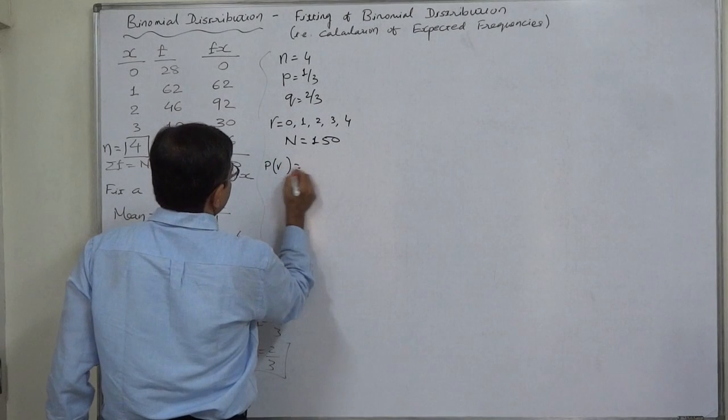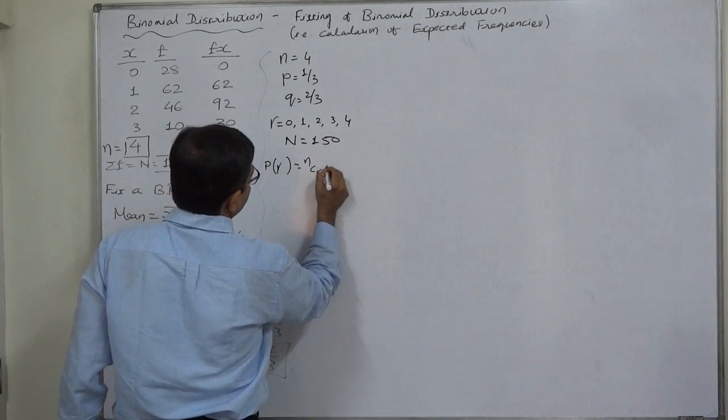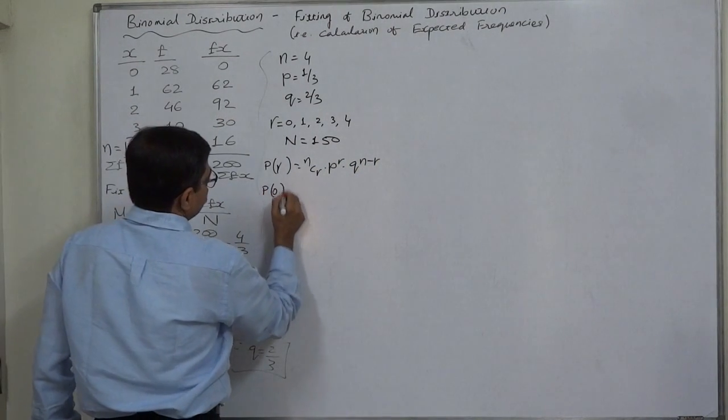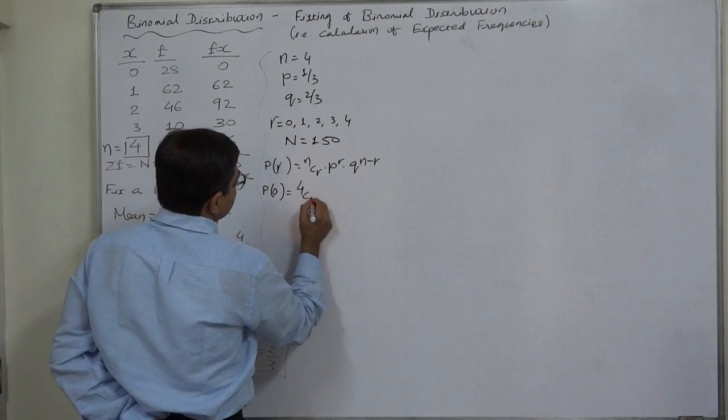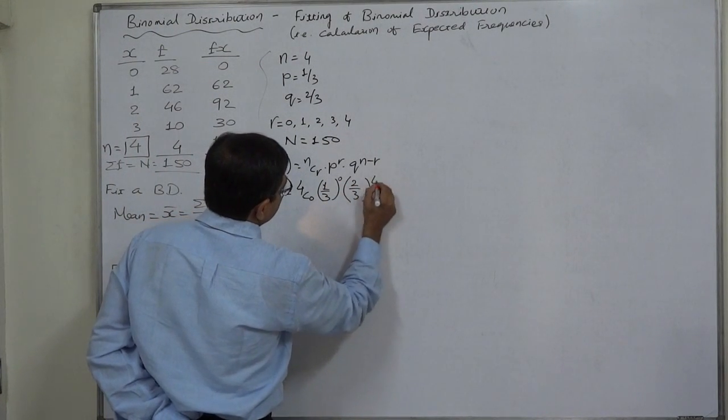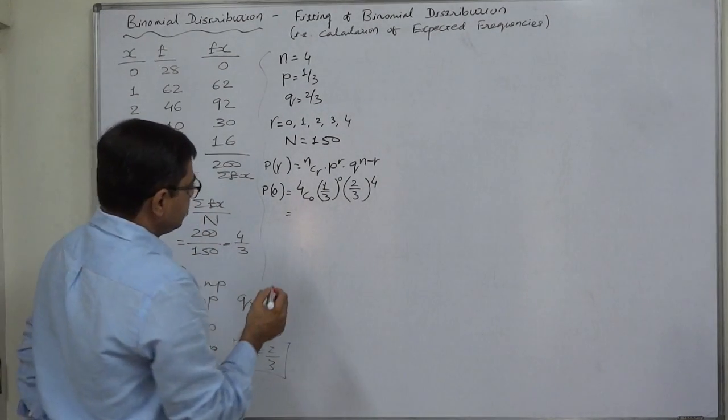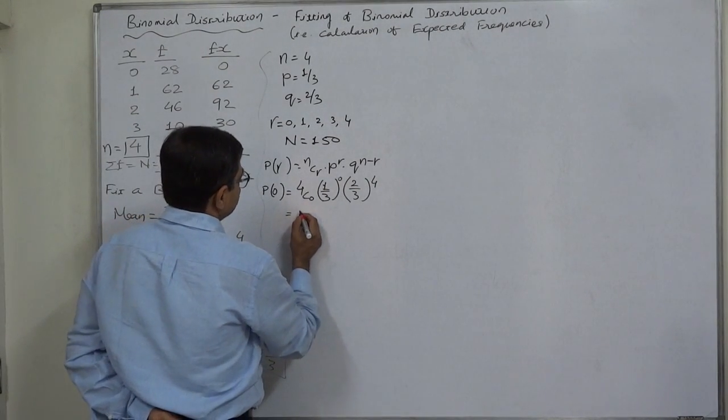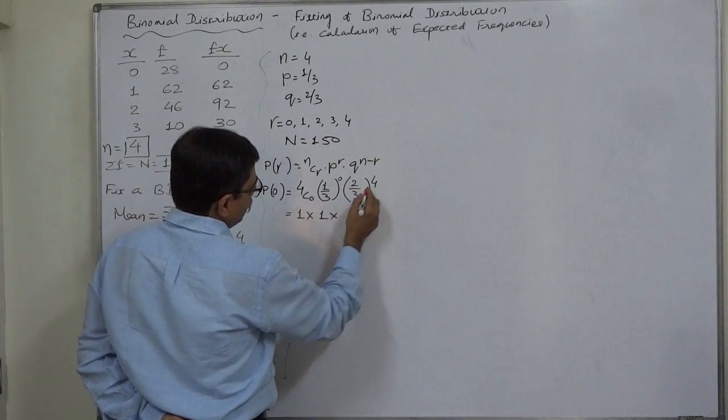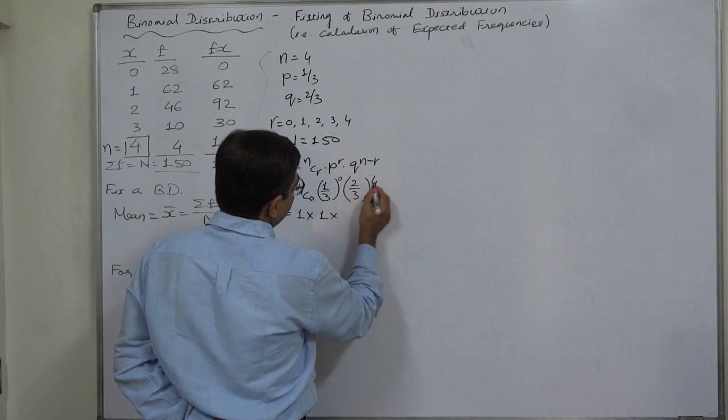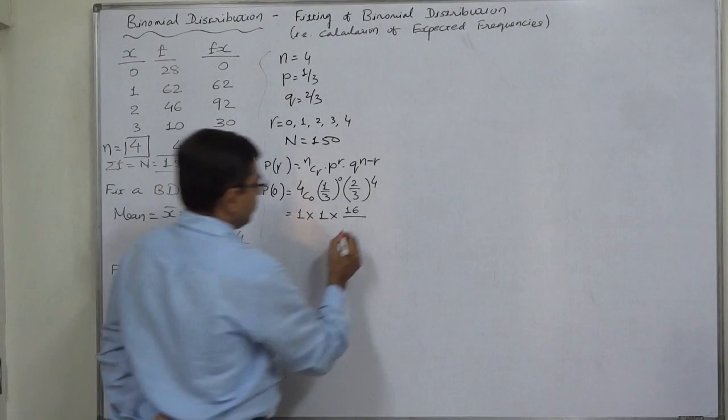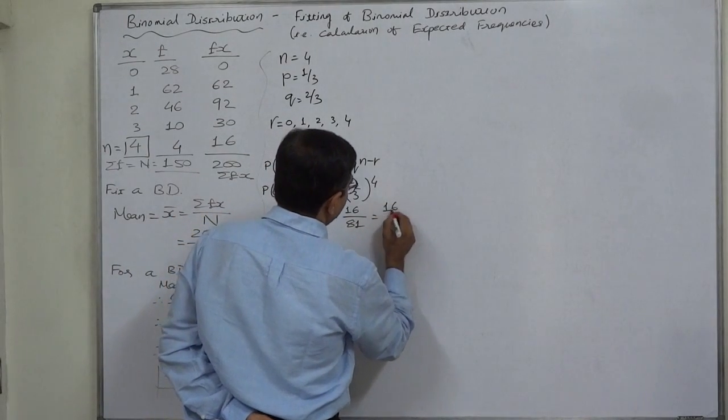So P of r successes is equal to nCr into p raised to r into q raised to n minus r. So P of 0 will be 4C0 into 1 by 3 raised to 0 into 2 by 3 raised to 4. 4C0 is 1, 1 by 3 raised to 0 is 1, 2 by 3 raised to 4: 2 raised to 4 is 16, 3 raised to 4 is 81. So it is 16 upon 81.